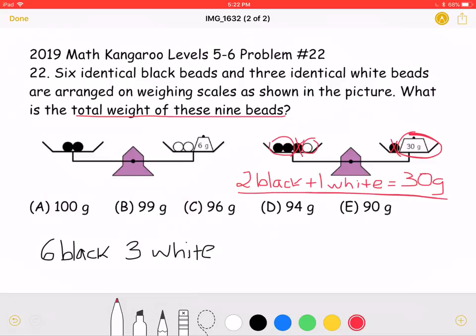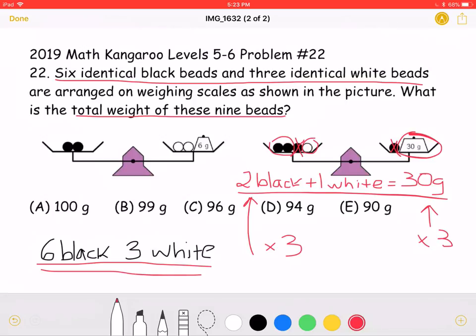However, we are trying to find how much six black beads and three white beads weigh. In order to find that, we would need to take this and multiply by three, giving us six black and three white. And we would also have to multiply this side of the equation by three. So you would get that six black plus three white is equal to 90 grams.